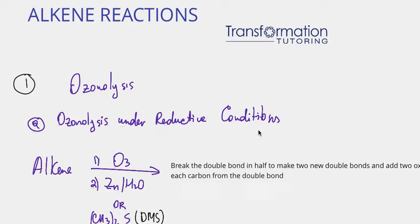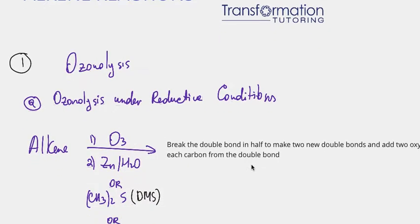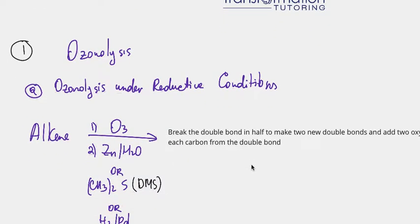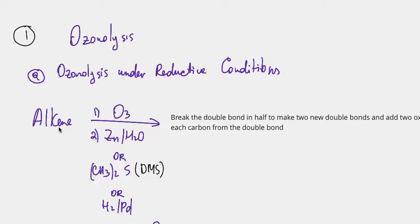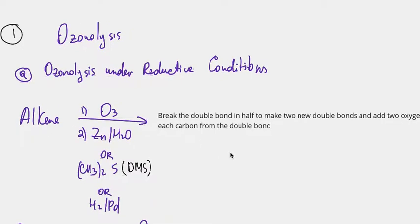In this video we will continue to learn alkene reactions. We will learn an easy way to predict products, just like in the last video, and specific reagents that are used for specific alkene reactions. The reactions shown today start with an alkene, which means you must have a C double bond C in your starting material to make these reactions happen.